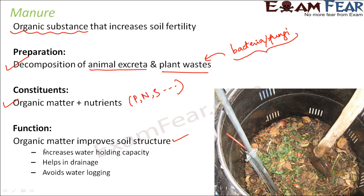The function of manure is to improve the soil structure. It increases the water holding capacity of the soil, meaning the soil can retain more water. This is good for the plant because the plant absorbs water through root hairs from the soil. It also helps in drainage and avoids water logging, which can sometimes kill plants.